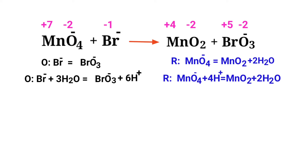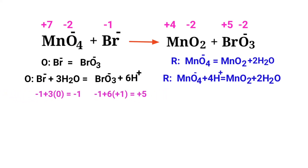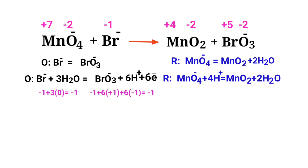For a redox reaction, the sum of charges must be equal on both sides. In the oxidation half reaction, both sides are not equal. To make them equal, add electrons to balance the charges — adding 6 electrons to the right side makes it equal to minus 1.